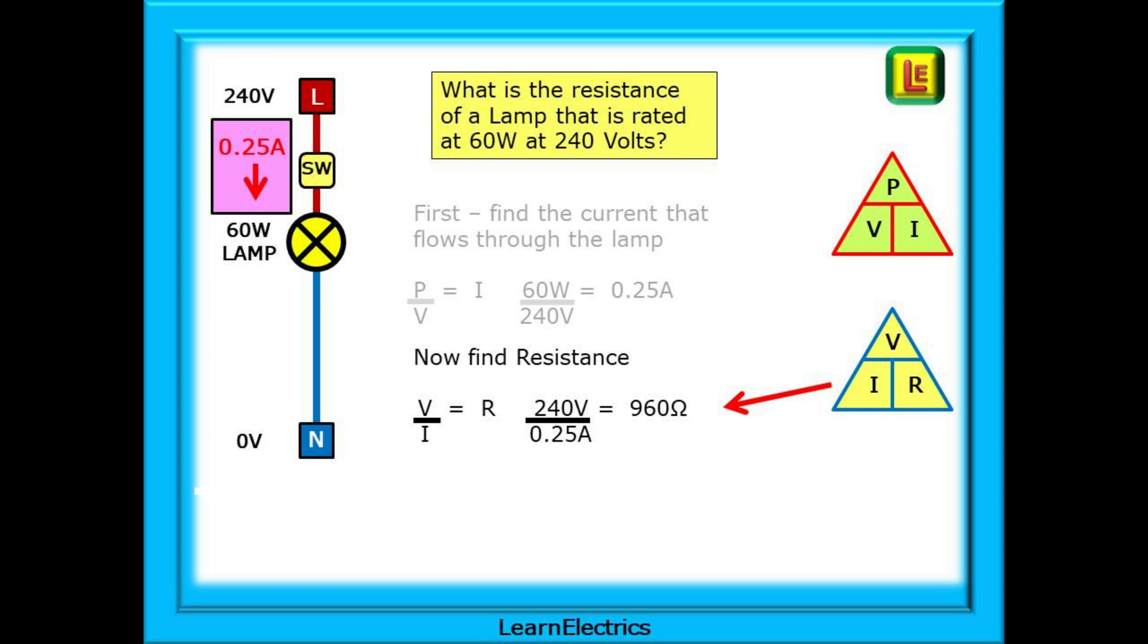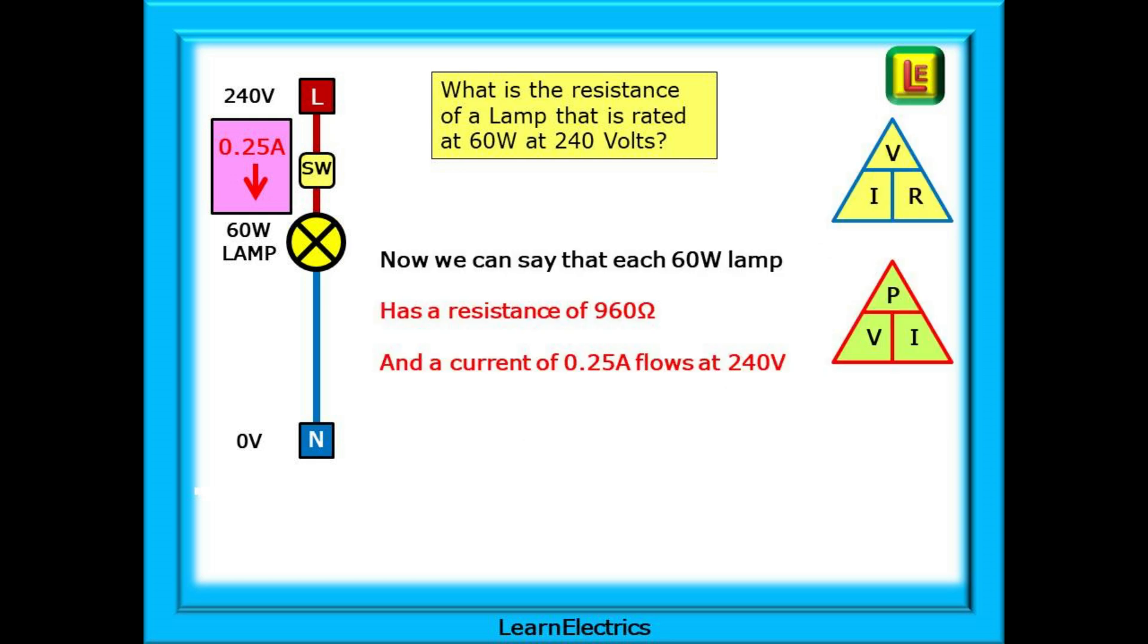Now that we know that 0.25 amps flows through the lamp, we can use Ohm's law to find the resistance of the lamp. Voltage divided by current gives resistance. 240 volts divided by 0.25 amps is 960 ohms, the resistance of the 60 watt lamp. Now we can say that at 240 volts supply, each 60 watt lamp has a resistance of 960 ohms and a current flow of 0.25 amps. And we can use this number, 960 ohms, in all of the following calculations.